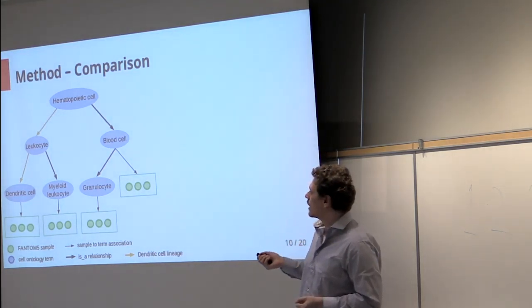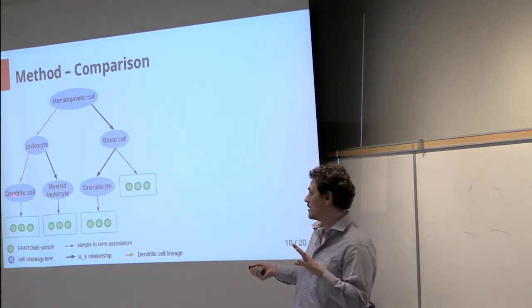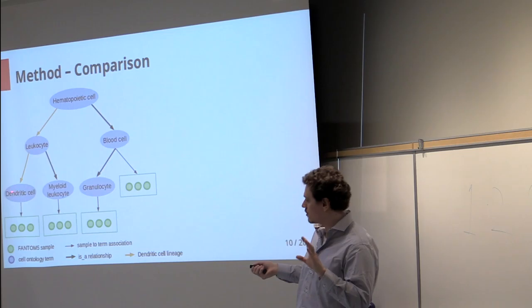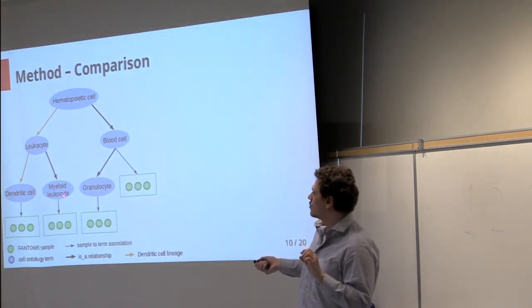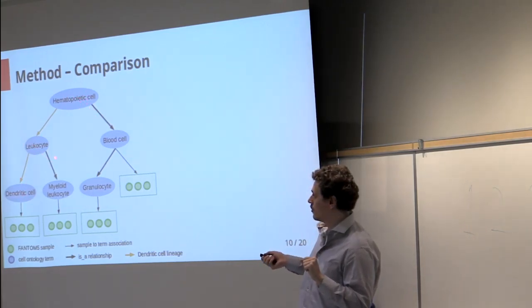So here we look at an example of how we find dendritic cell-specific genes compared to other cell types. What we do is we first identify the parents of dendritic cells.